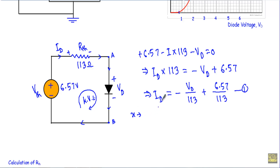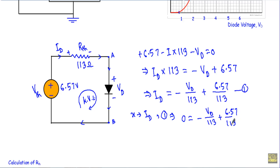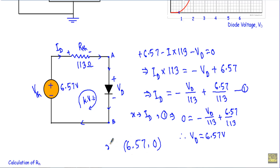To find the X-intercept, set Id = 0. From the load line equation: 0 = −Vd/113 + 6.57/113, which gives Vd = 6.57V. So the load line intersects the x-axis at the point (6.57V, 0).